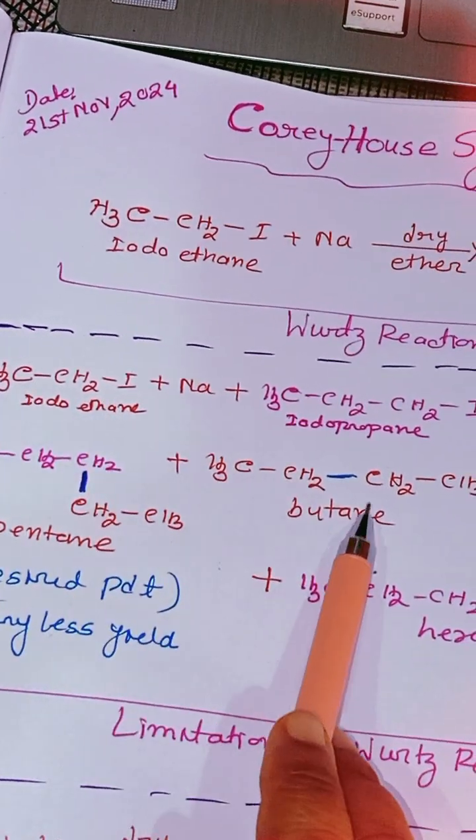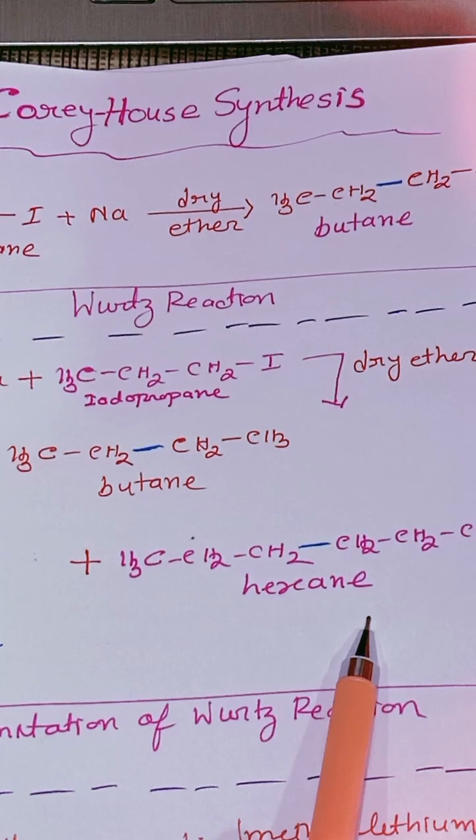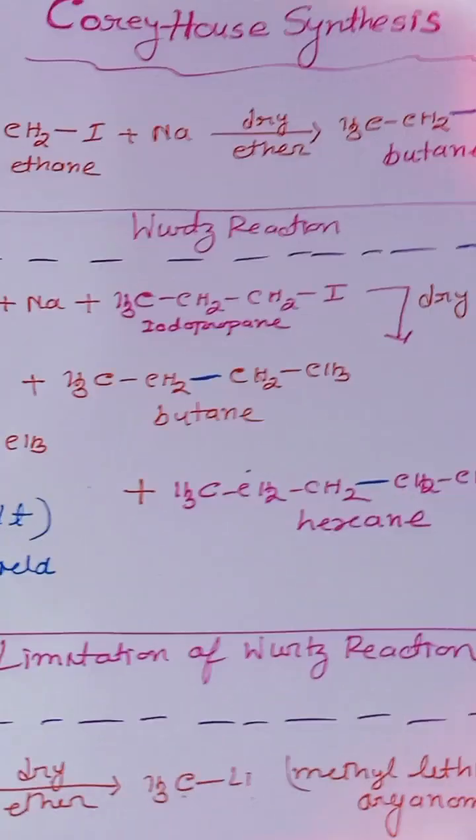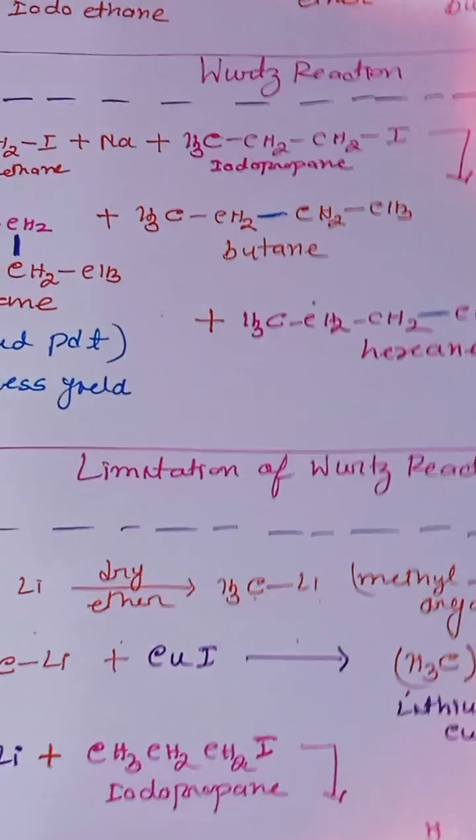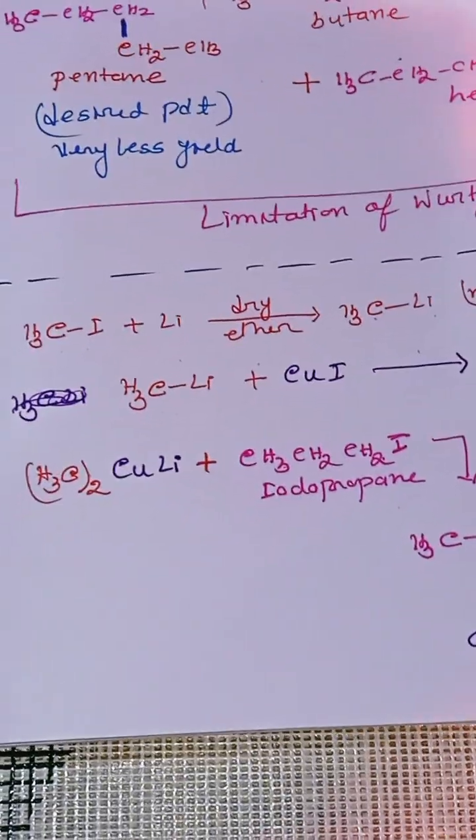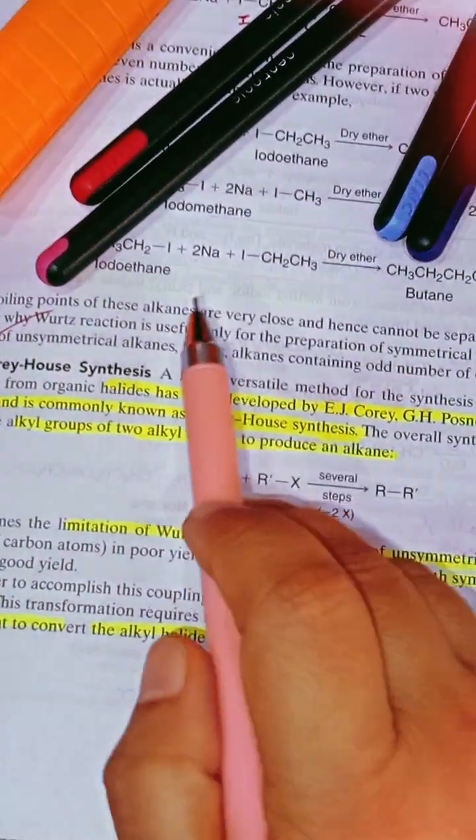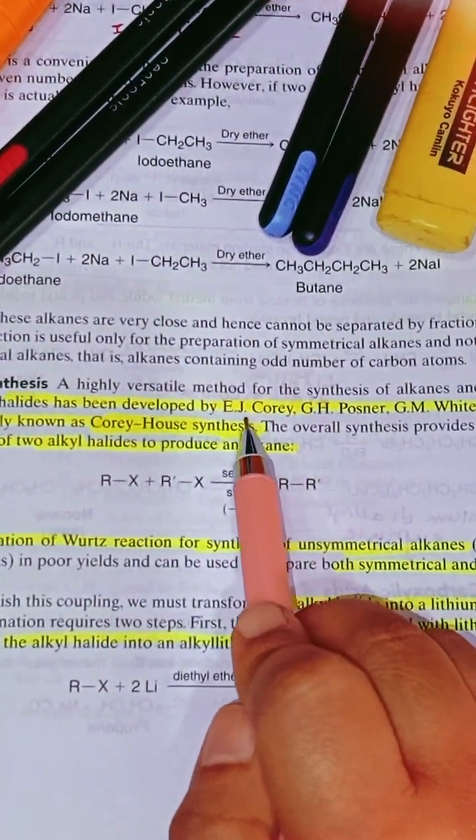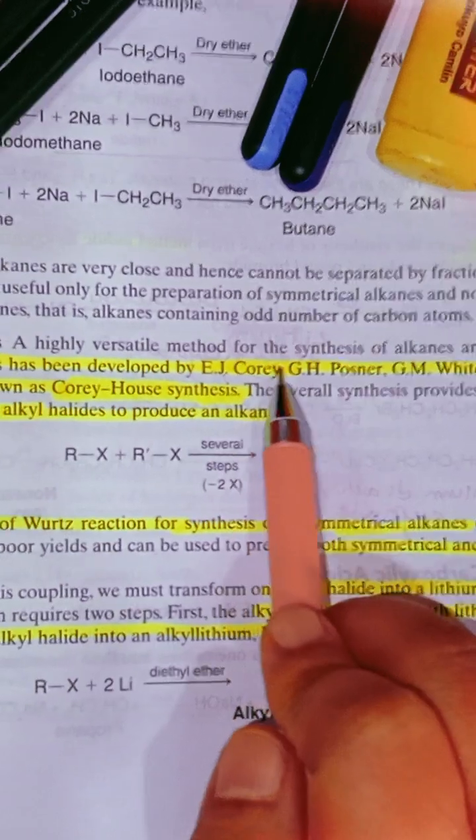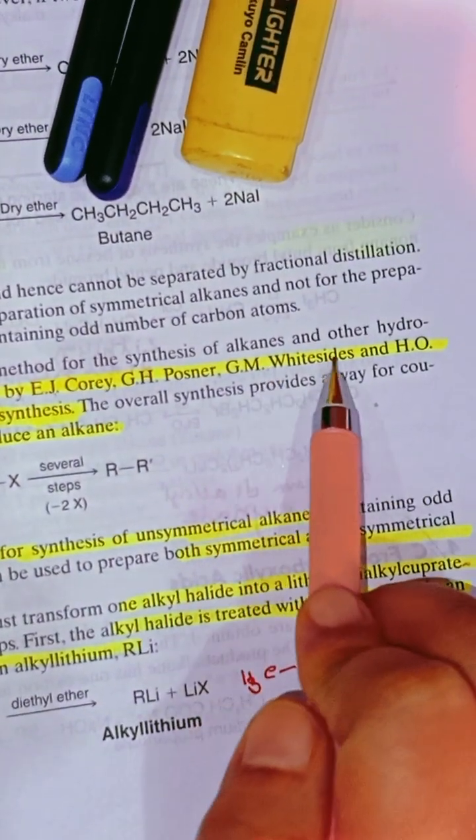We are getting multiple products like butane when two ethyl groups combine and hexane when two propyl groups combine. To overcome this problem, we have moved to Corey-House reaction. Corey-House synthesis is a multi-step synthesis proposed by scientists E.J. Corey, G.H. Posner, J.M. Whitesides, and H.O. House.